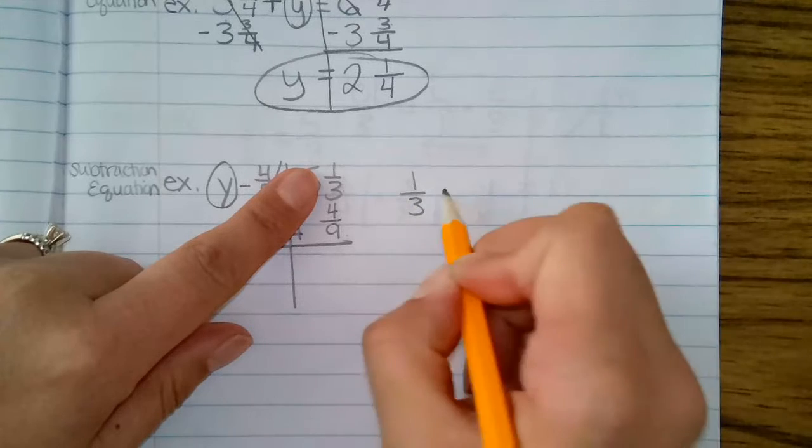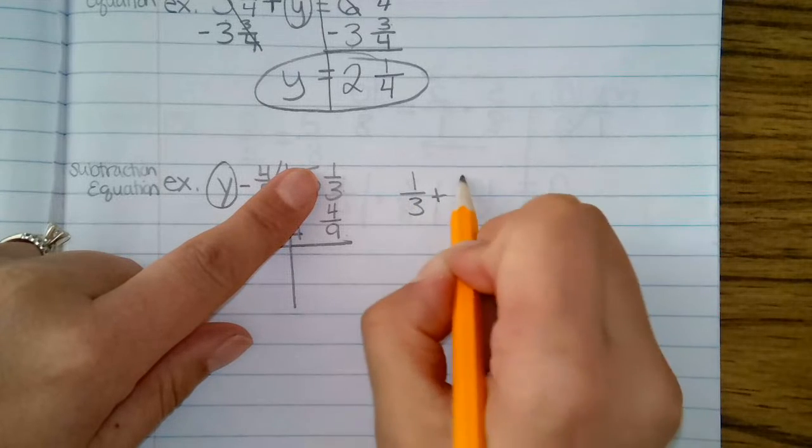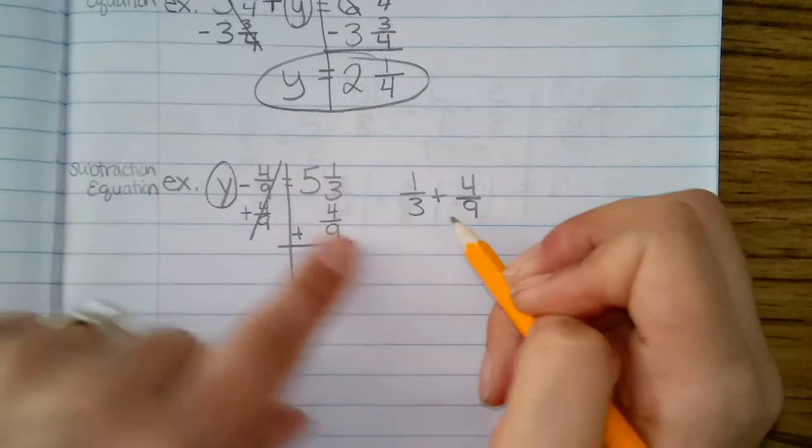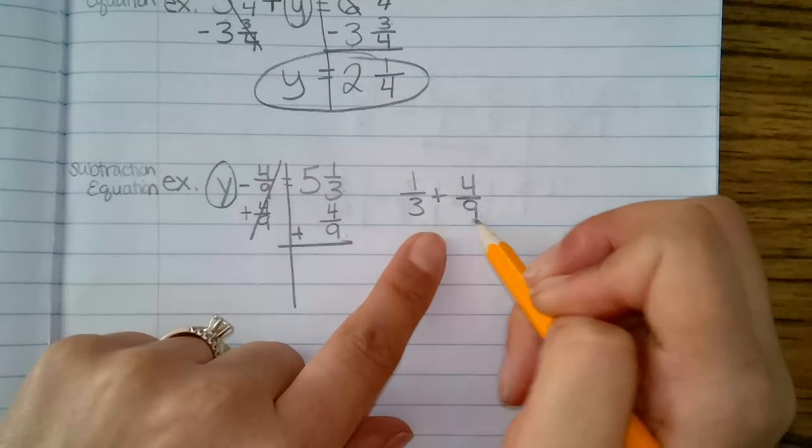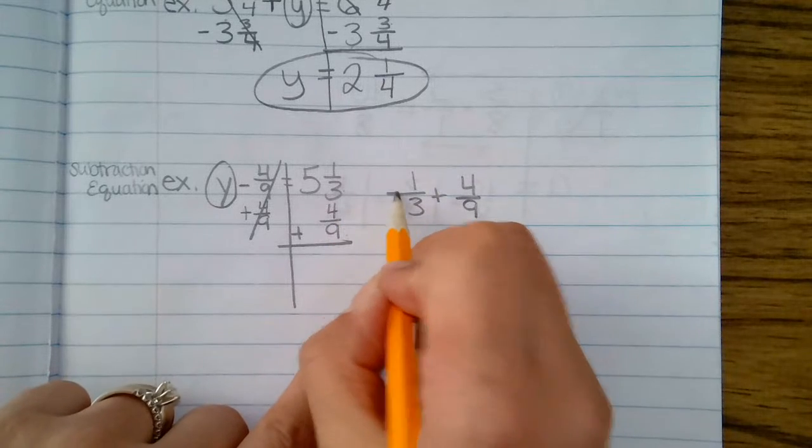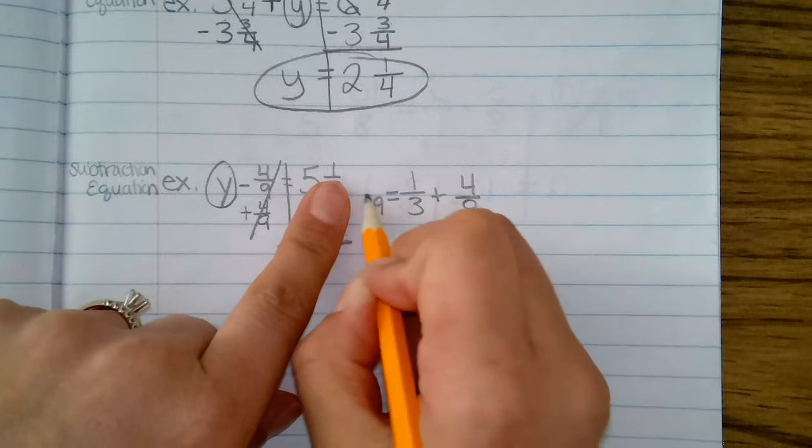One third plus four ninths. I have to make sure my denominators are the same. I know that three can go into nine, so I'm going to try and make one third an equivalent fraction to something over nine.